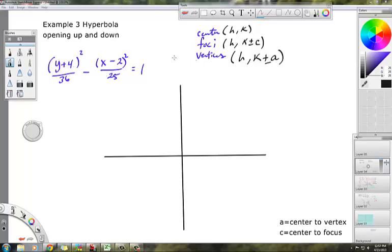You have to basically find these three things, and to do that you can do it without drawing the picture. Let me show you. Center is H, K. This is of the form Y minus K over a squared equals X minus H.